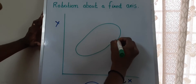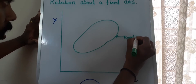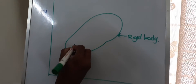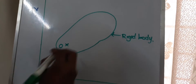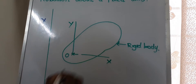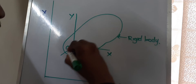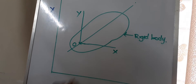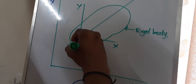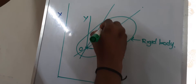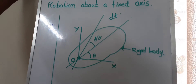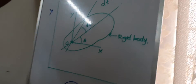Now let us consider a rigid body fixed at a point O. Let the reference x-axis be horizontal and the reference y-axis be vertical. If the initial position of this rigid body is at an angle theta from the reference x-axis, then after some time the rigid body may rotate by an additional angle d-theta, with that motion taking a time interval dt.